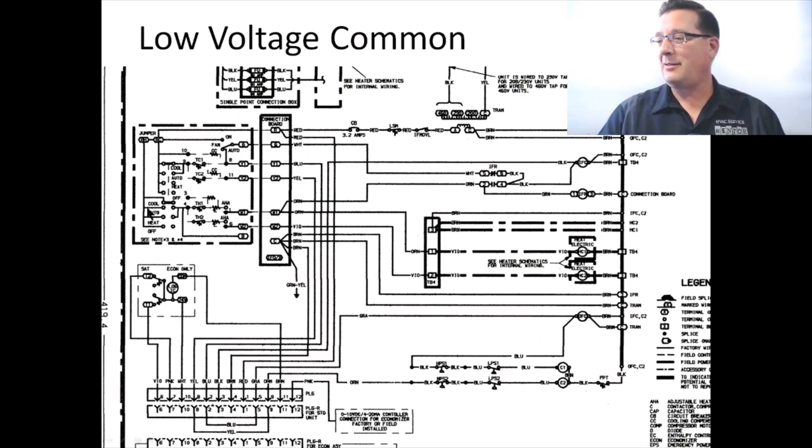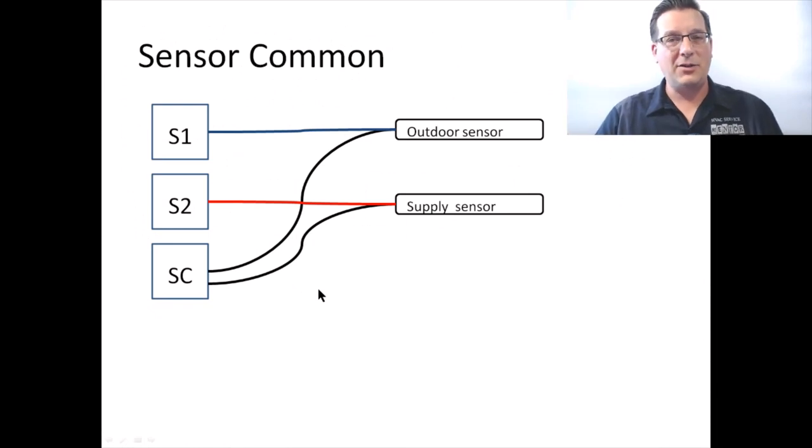The last common designation of the term common is what I call a sensor common. Some electronic controllers and electronic circuit boards take information from analog sensors, very commonly temperature sensors. Boiler outdoor reset controllers do this quite a bit, where there will be an outdoor air temperature sensor and there will be a supply water temperature sensor and the controller needs to reference both of these temperatures to make decisions about how it adjusts the temperature set point of the boiler. So there are two sensors and there are three terminals that these sensors connect to. Sensor one, which is meant to be the outdoor sensor, sensor two, which is meant to be the supply water sensor and sensor common, which means that the other two wires of each sensor both land on a common terminal. Both sensors share this terminal in common with one another.